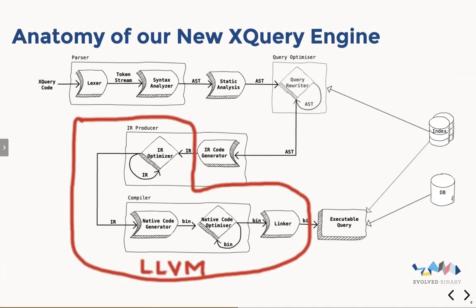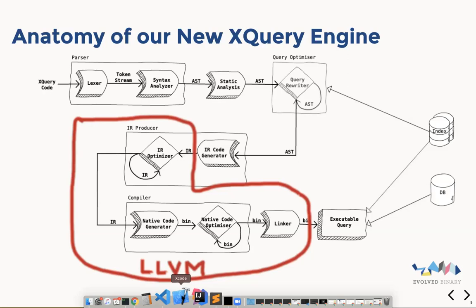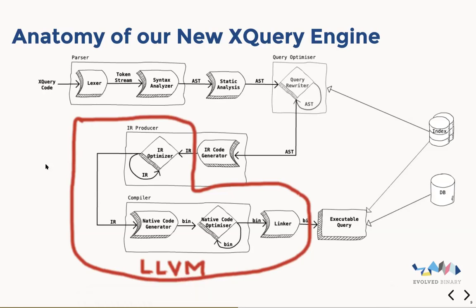So this is our anatomy diagram from earlier, and I've highlighted the bit that LLVM does for us. We have to control LLVM and tell it what to do, but it certainly takes a lot of the work away. Really, we generate our IR code from our abstract syntax tree, and then it goes into LLVM and out of the other end comes the executable code. One of the nice things is that LLVM has a whole suite of optimizations you can switch on and off depending on your needs, so we don't have to write low-level code optimizations — LLVM will take care of things like code inlining, lifting of variables and functions, and things like this.